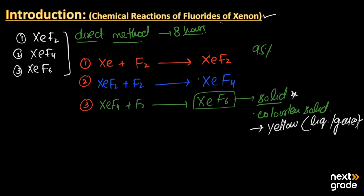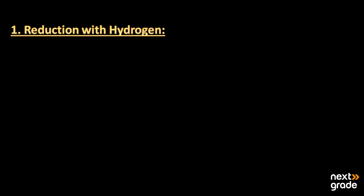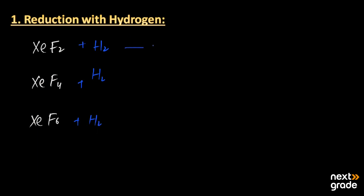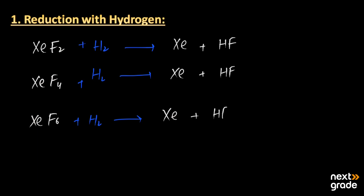Now we move to the main chemical properties. The first is reduction with hydrogen. We have three compounds: xenon difluoride, xenon tetrafluoride, and xenon hexafluoride. When they react with hydrogen gas, the products are xenon — which is common to all three reactions — along with hydrofluoric acid (HF), produced by balancing the equation.